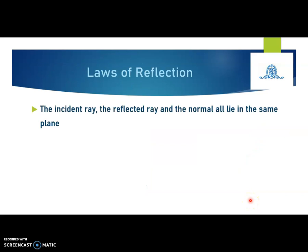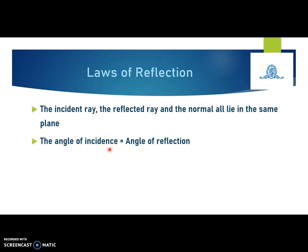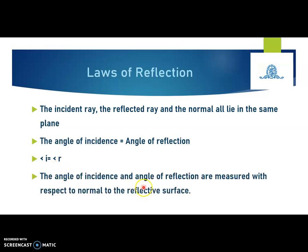Now let us see the laws of reflection. The first law of reflection is the law of coplanarity — the incident ray, reflected ray, and normal all lie in the same plane. The second law states that the angle of incidence is always equal to the angle of reflection. If I is the angle of incidence and R is the angle of reflection, then both angles are always the same. Both angles are always measured with respect to the normal to the reflecting surface.